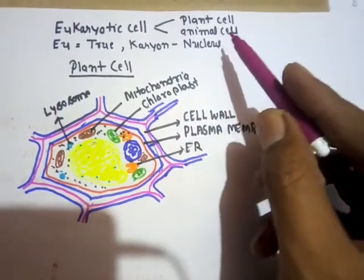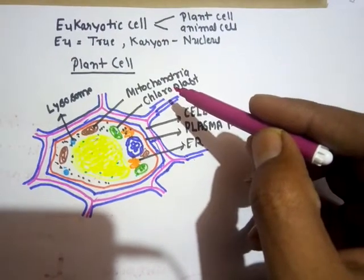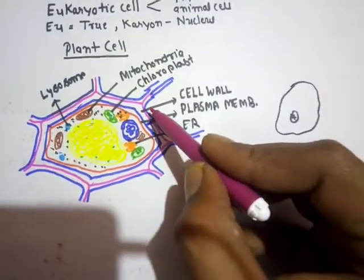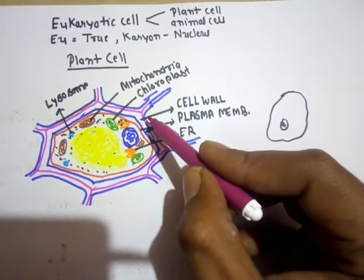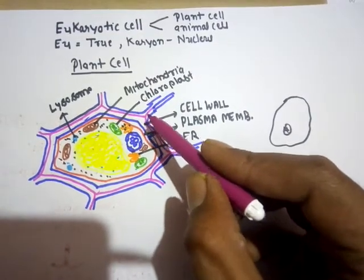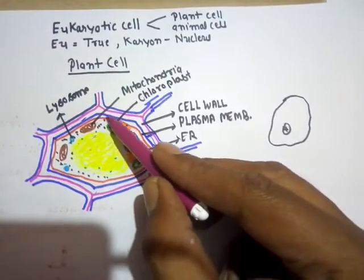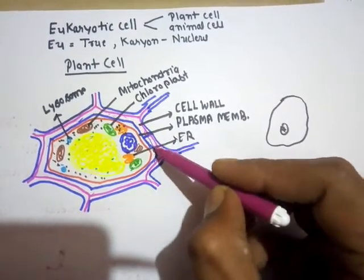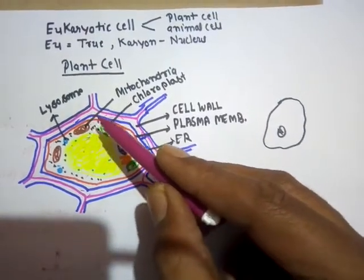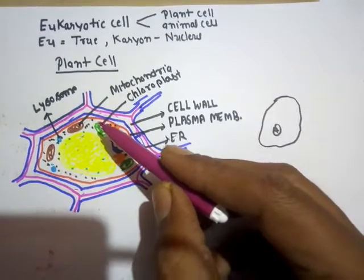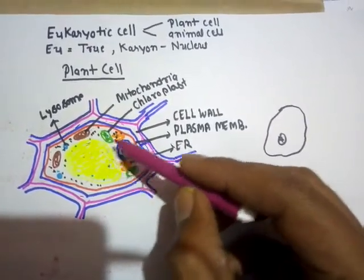Let's discuss the structure of a plant cell, because examples of eukaryotic cells are plant cells and animal cells. Plant cells always have a definite structure — they don't have the ability to change their shape. The reason is clear: there is a plasma membrane, and outside it a thick rigid cell wall is present. This cell wall is made up of cellulose and is rigid, so the plant cell is unable to change its shape.